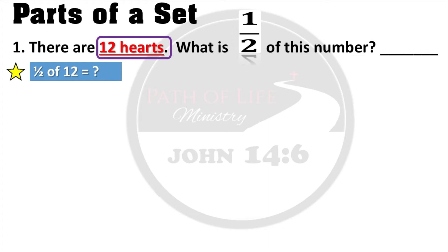The next step is to identify what number is in the denominator — the denominator is the bottom number of the fraction. Since the fraction is one half, the denominator is two. This tells us that we must draw two sets or two groups.